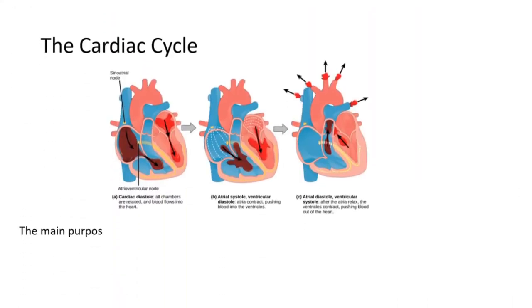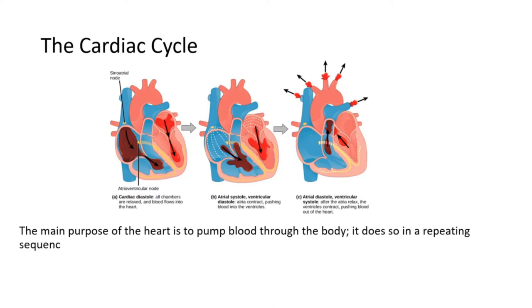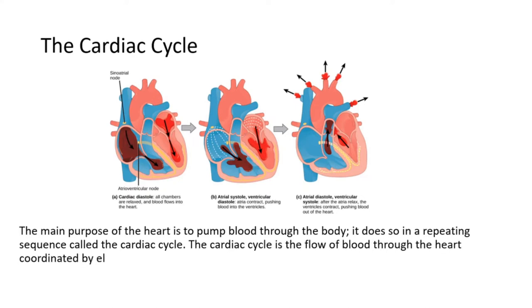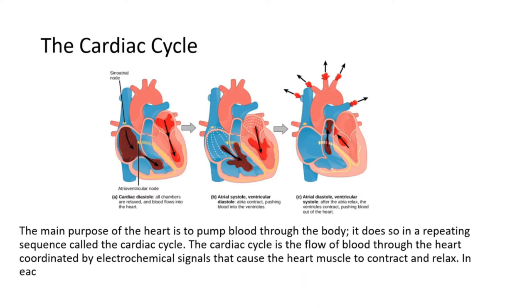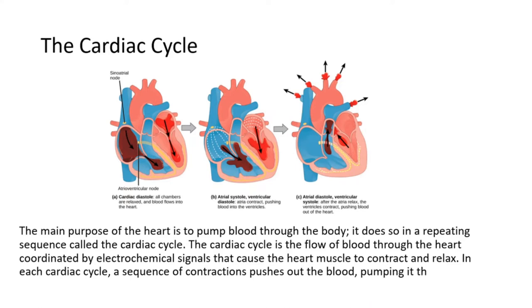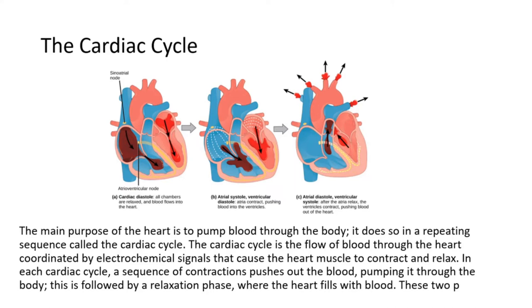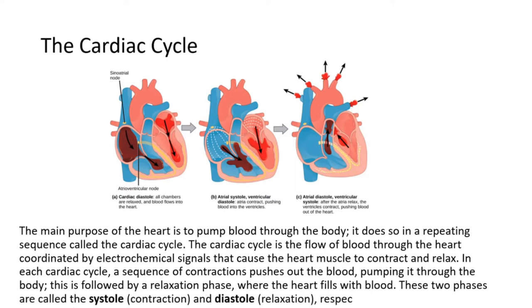The cardiac cycle. The main purpose of the heart is to pump blood through the body. It does so in a repeating sequence called the cardiac cycle. The cardiac cycle is the flow of blood through the heart coordinated by electrochemical signals that cause the heart muscle to contract and relax. In each cardiac cycle, a sequence of contractions pushes out the blood, pumping it through the body. This is followed by a relaxation phase where the heart fills with blood. These two phases are called the systole (contraction) and diastole (relaxation), respectively.